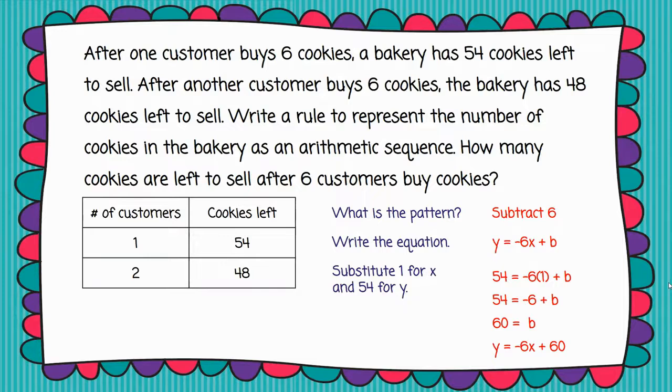Now friends, I can finish this equation up by putting my bonus amount into the equation, and I get y equals negative 6x plus 60 for my equation. Now it's going to be really simple to find out how many cookies are left after six customers.